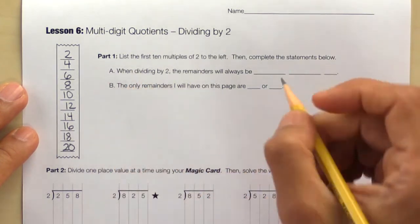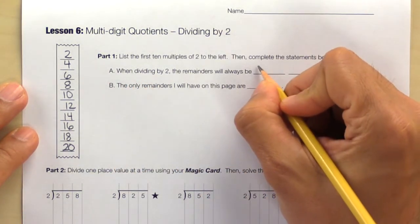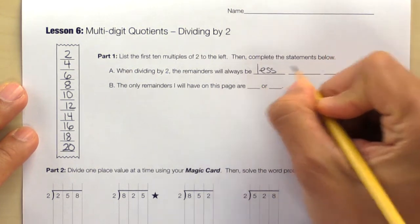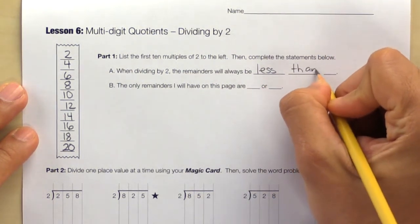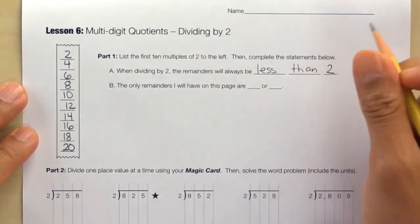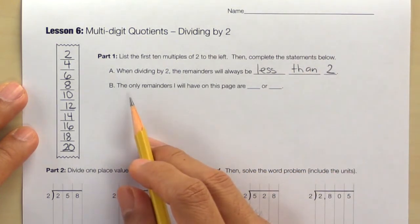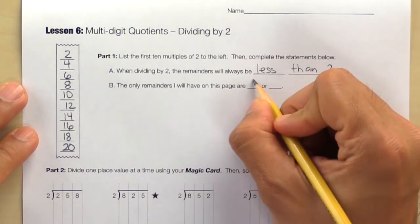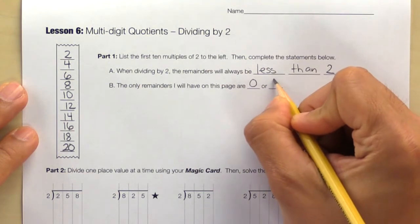When dividing by 2, the remainders will always be less than 2. The only remainders I will have on this page are 0 or 1.